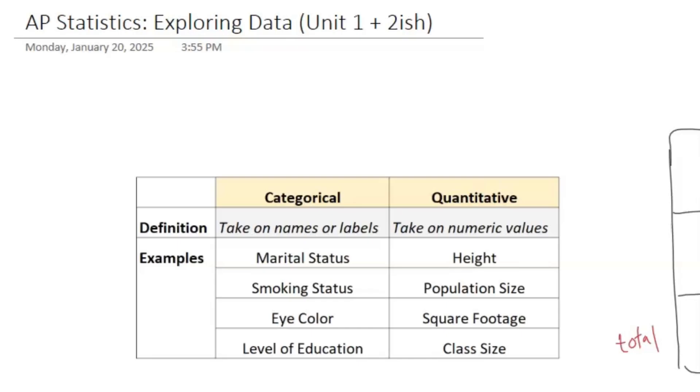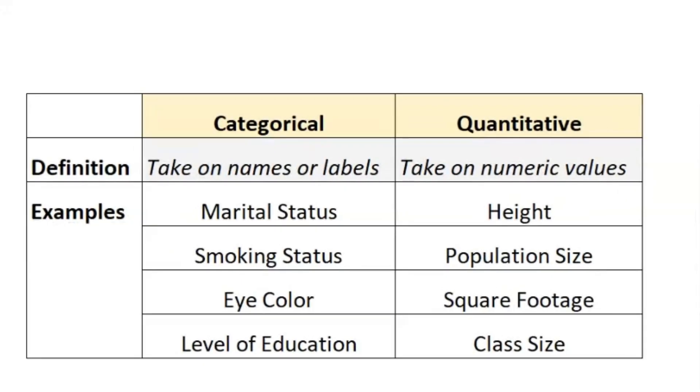Alright, so let's tackle everything you need to know for AP Statistics Unit 1, starting off with the difference between categorical and quantitative data. Quantitative data just deals with numbers, so think quantity, numbers - that's stuff like heights, class size, population size, anything you put a number on. And categorical stuff, that's like names and labels, so think like eye color, hair color, you can't put a number on that.